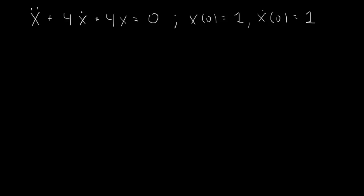Let's solve x double dot plus 4x dot plus 4x equals 0. Dot represents a time derivative. x of 0 equals 1 and x dot of 0 equals 1.